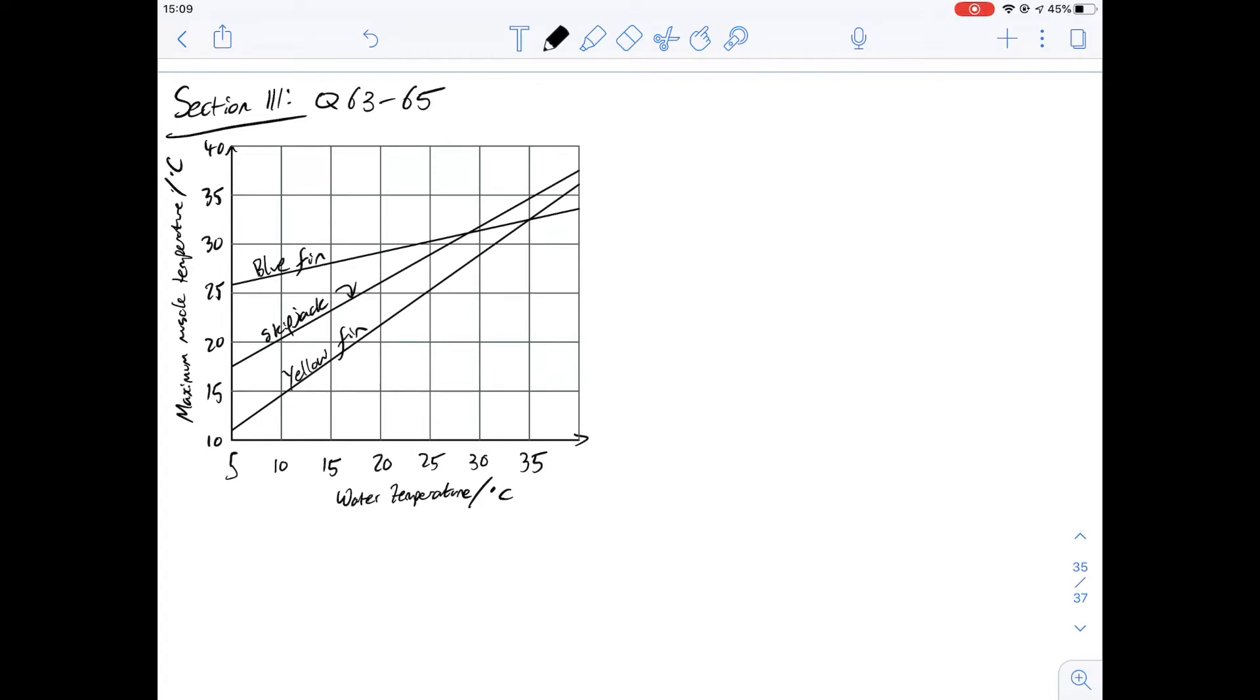Hi, I'm Carl and in this video we're going to have a look at questions 63 to 65 of section 3 of the purple booklet. This is comparing three types of fish, their maximum muscle temperature at different water temperatures.